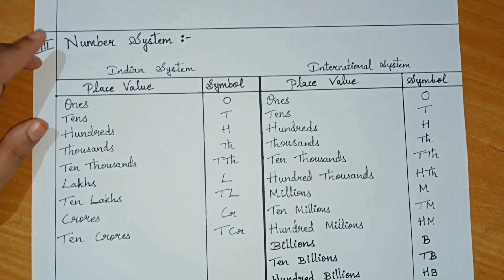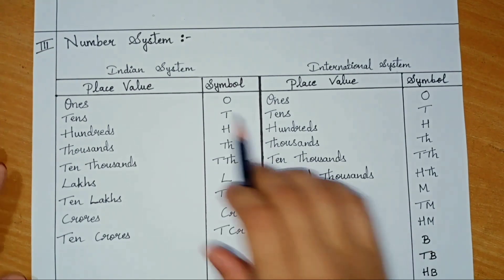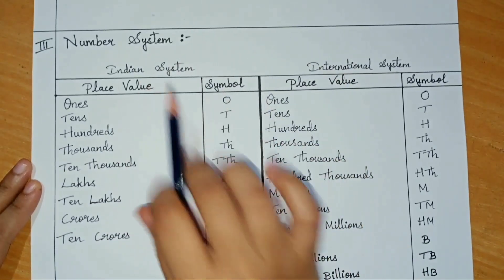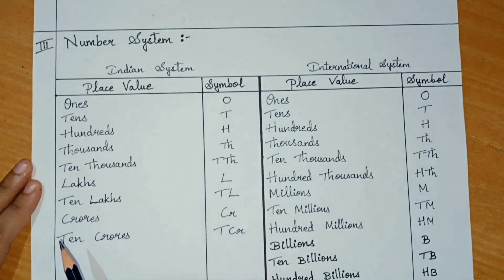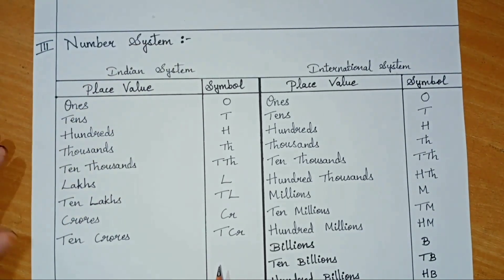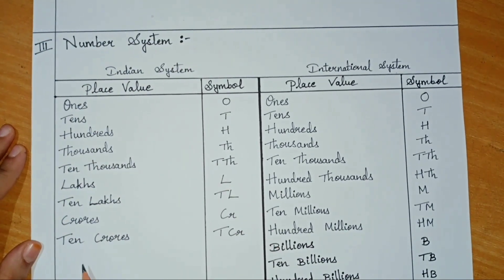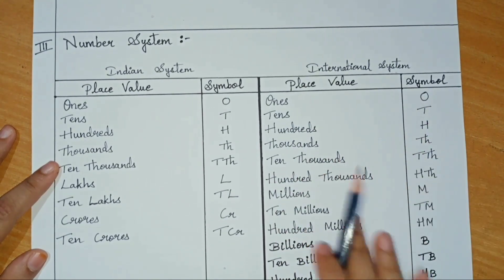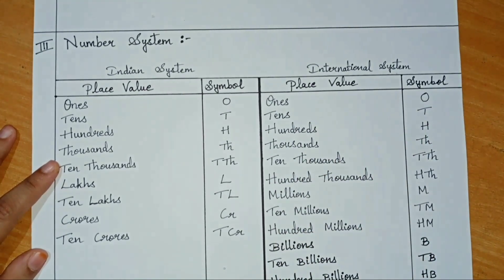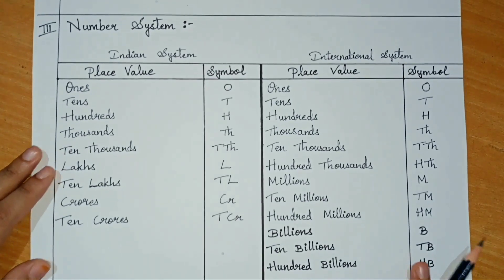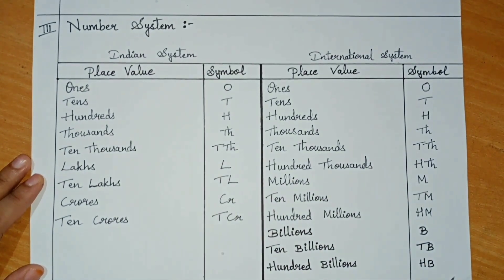Next, let us look at the number system. In this chapter, we will be studying about two types of number systems: Indian and international number system. I have written down the place values and the symbols that are used for the Indian number system and the place values and the symbols used for the international number system. You can just pause the video and note down this.